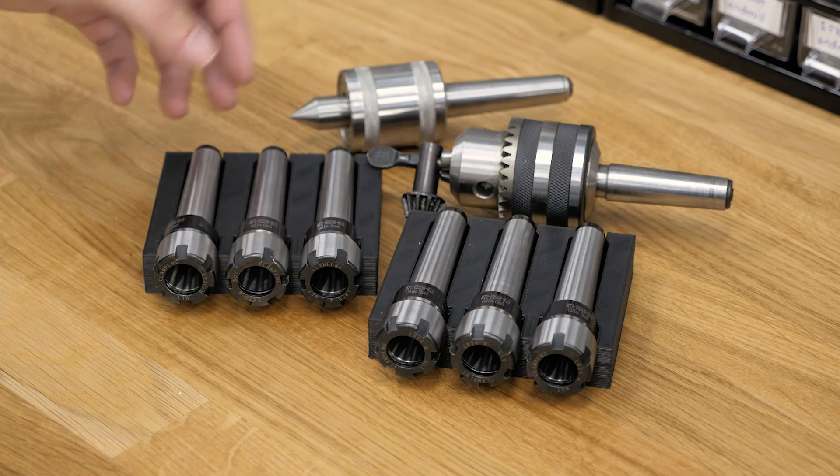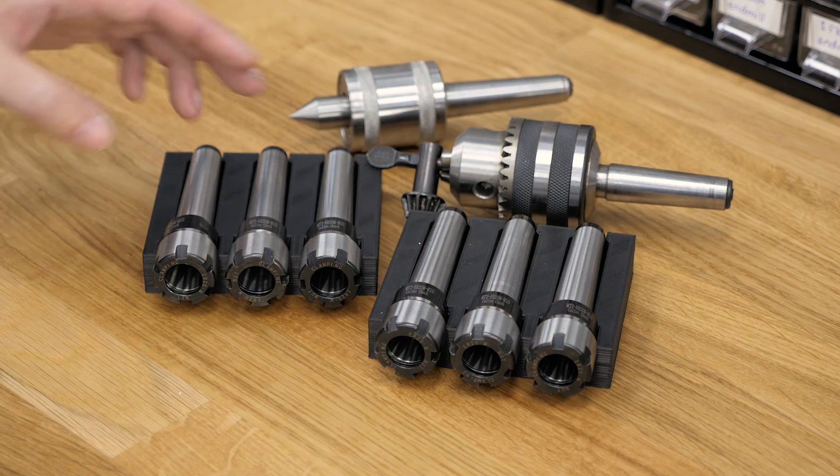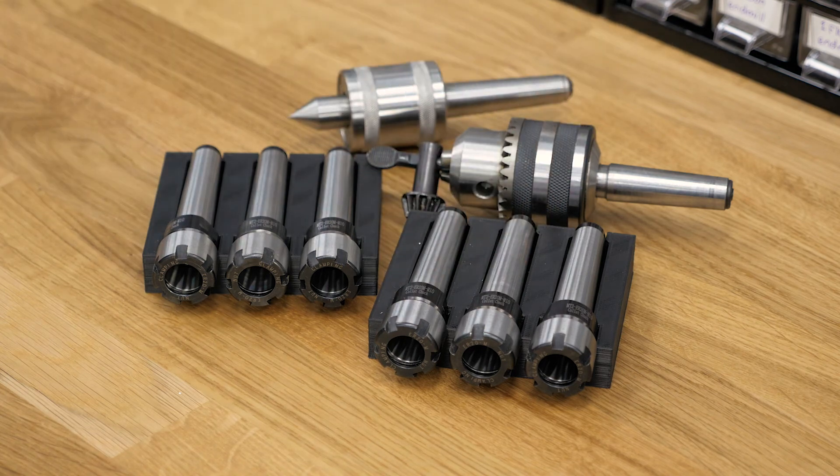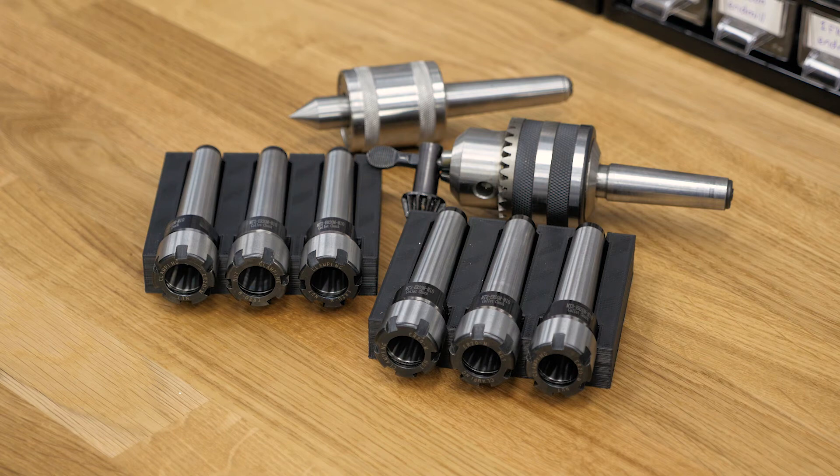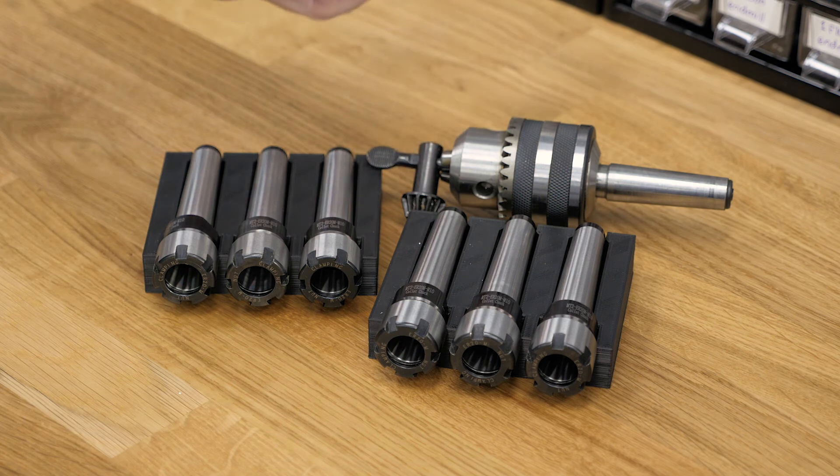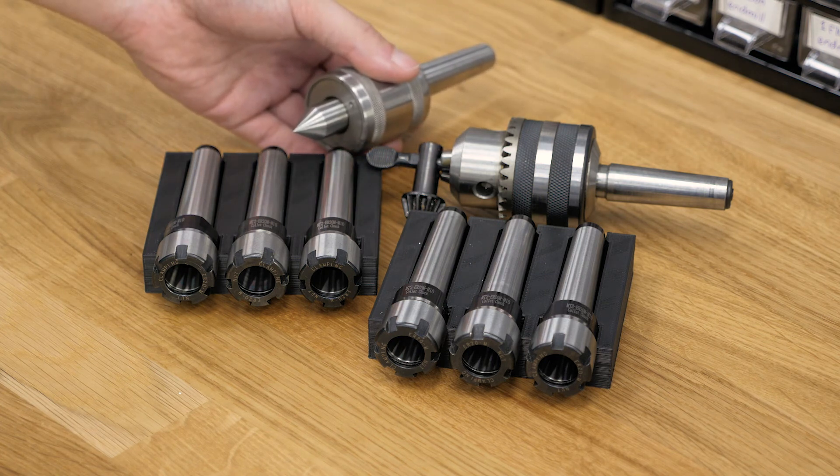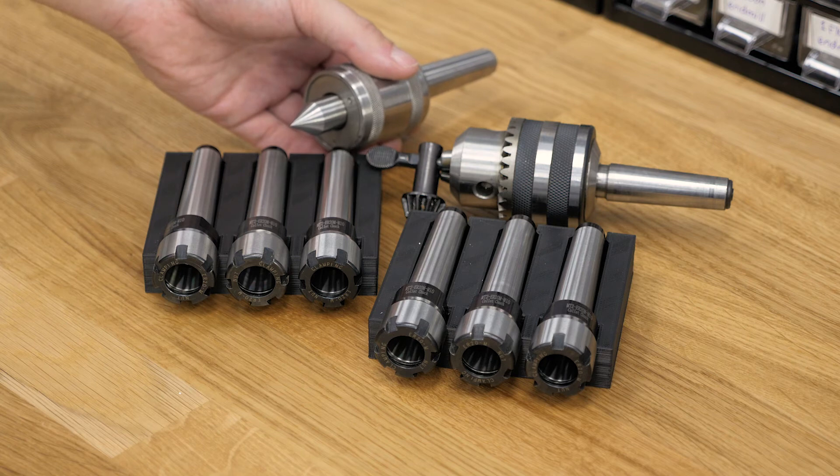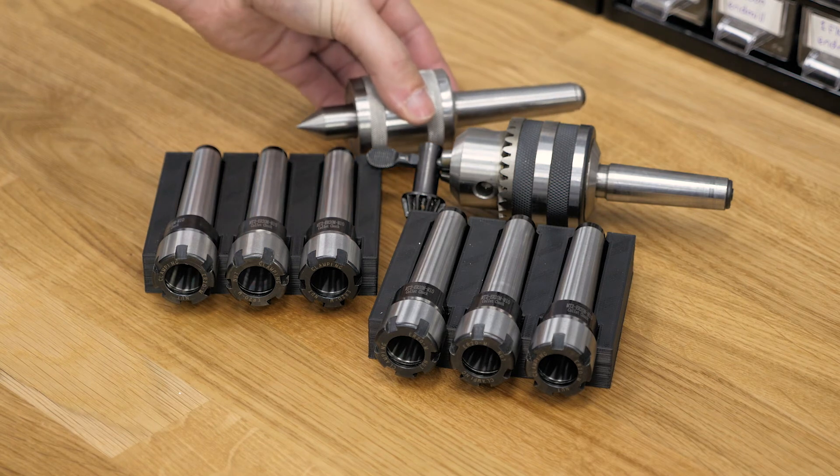So now if I start a project, I just load up these tool holders with the tools I need. And then I can just quickly swap them around in the tailstock. And last I have, as everyone should have with a tailstock, a live center for the longer parts.